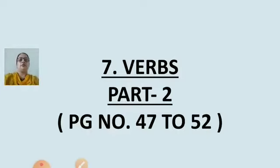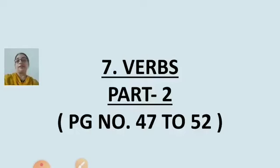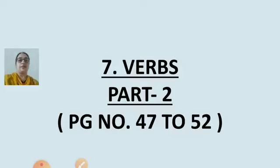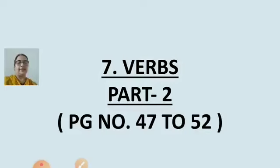In our part 1 of the verbs chapter, we covered that action words are called as verbs, and we have seen the helping verbs. We studied that the action done by the subject in the sentence is called an action verb. The helping verbs we saw are: am, is, are, was, were, has, have, shall, will, should — because they help the verbs to make the complete sentence, and helping verbs tell us when something is happening. This is what we studied in our previous class.